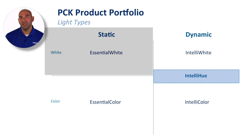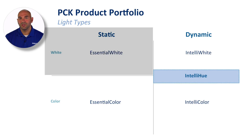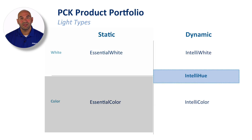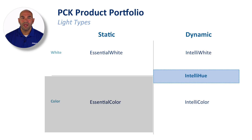A static white light luminaire is known as Essential White, or EW. These fixtures are available in a wide range of color temperatures from 2200 Kelvin to 6500 Kelvin. A static color luminaire is known as Essential Color, or E-Color. These fixtures are available in red, green, blue, or amber.